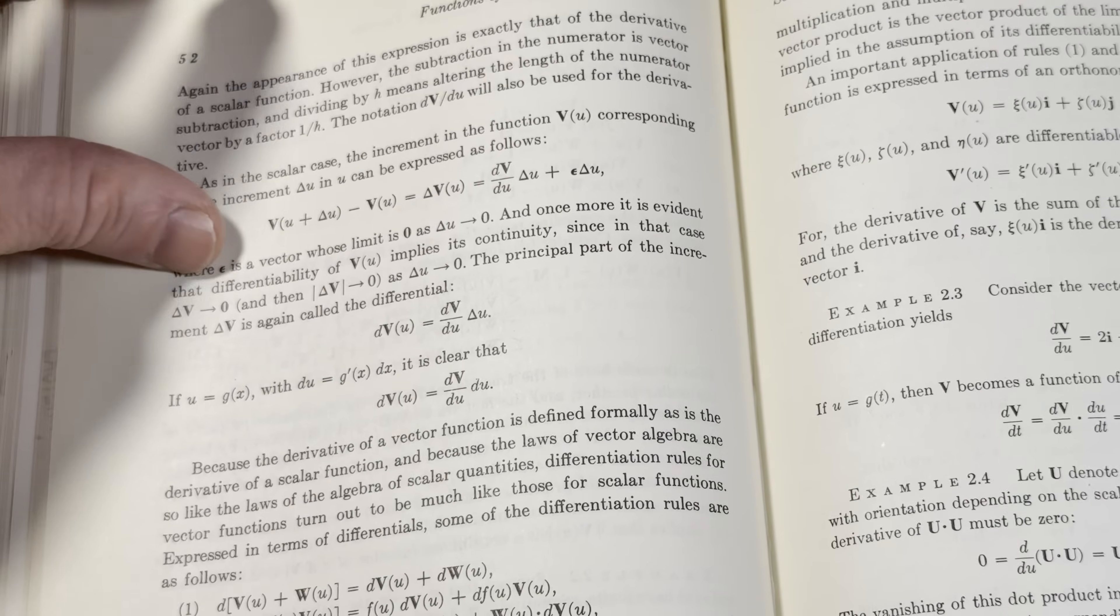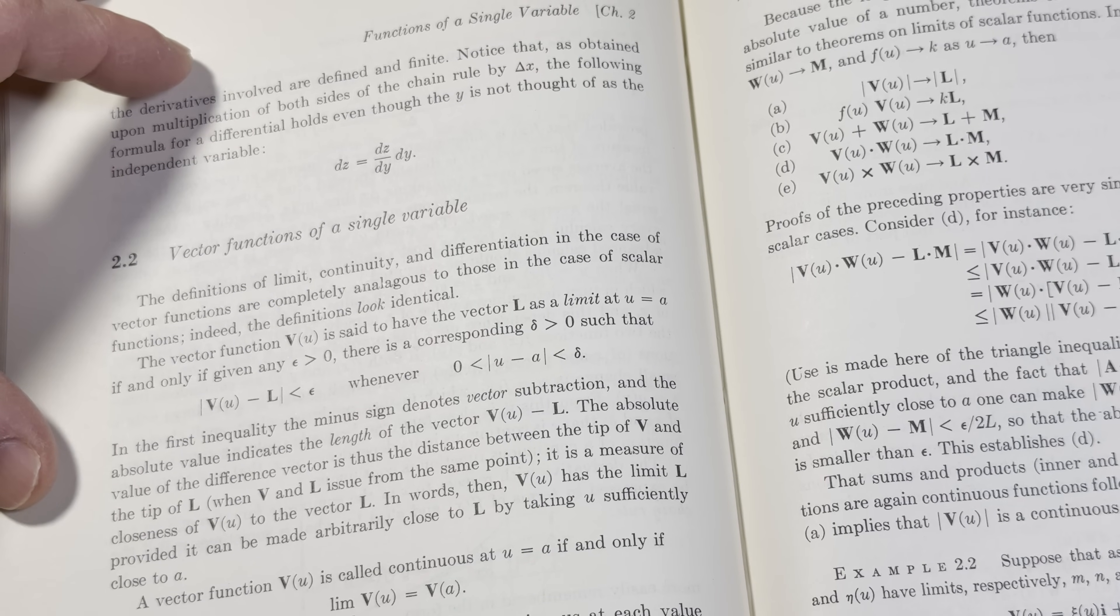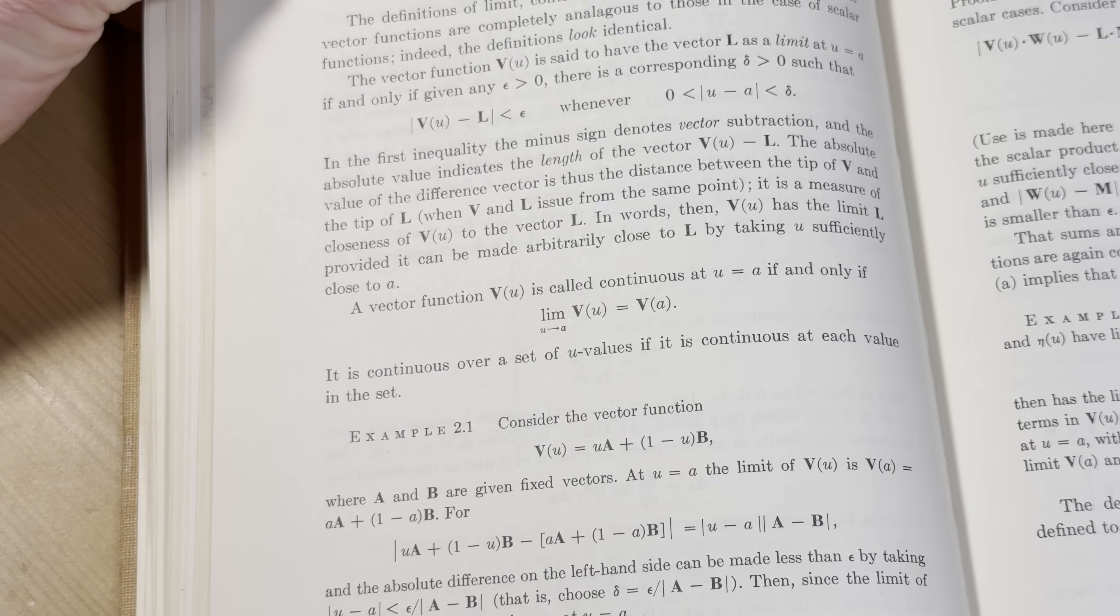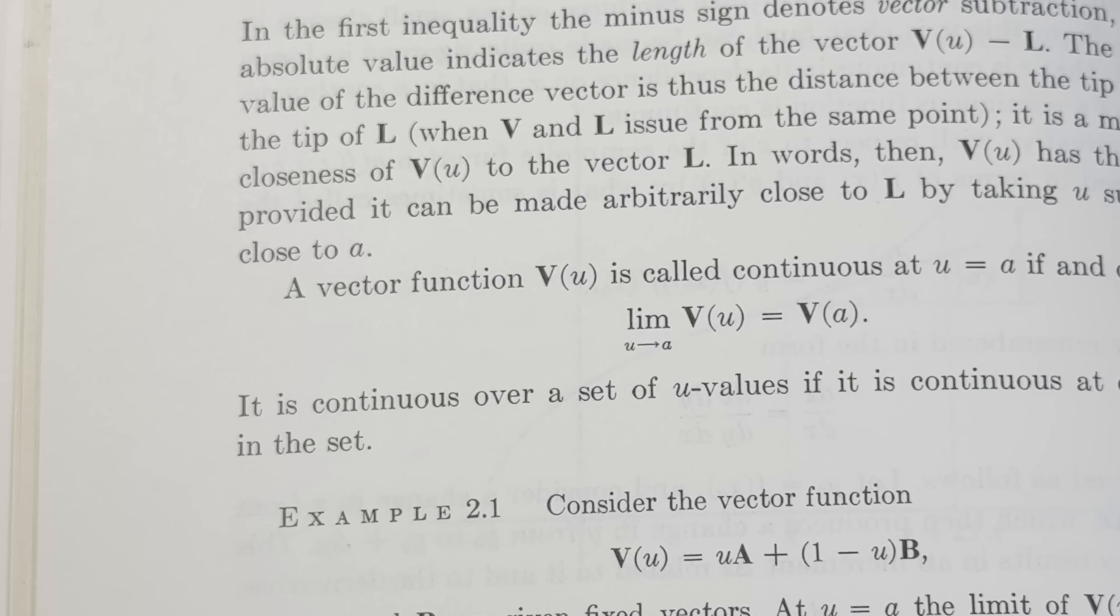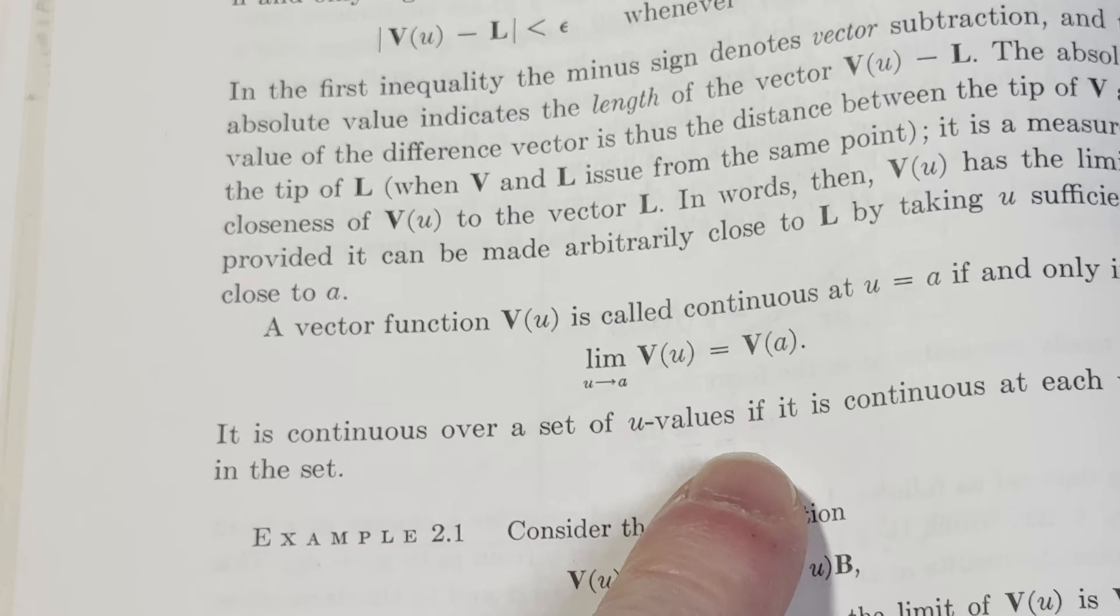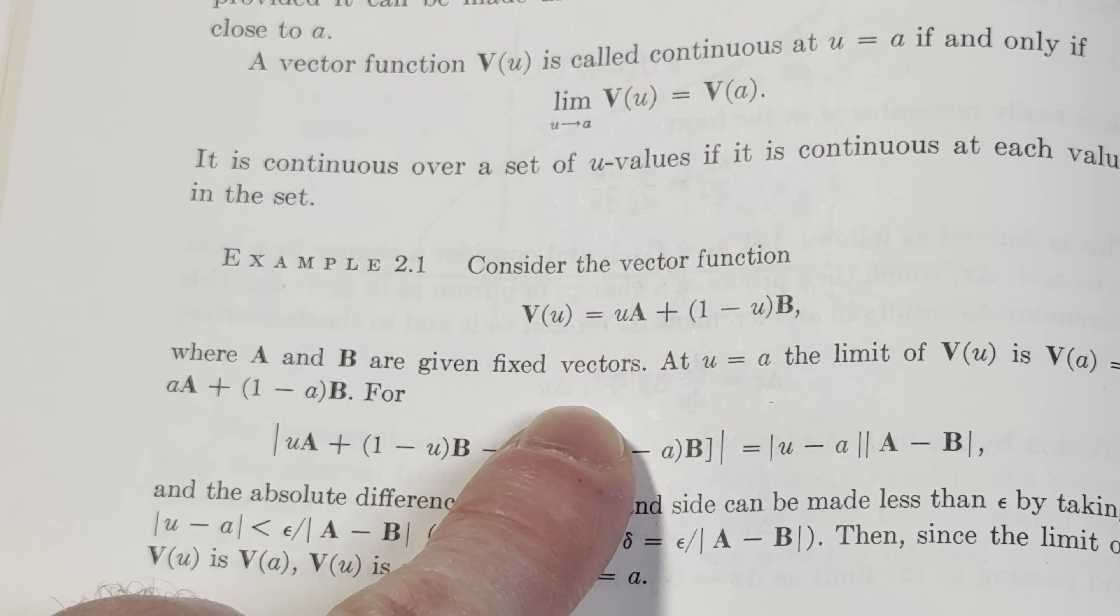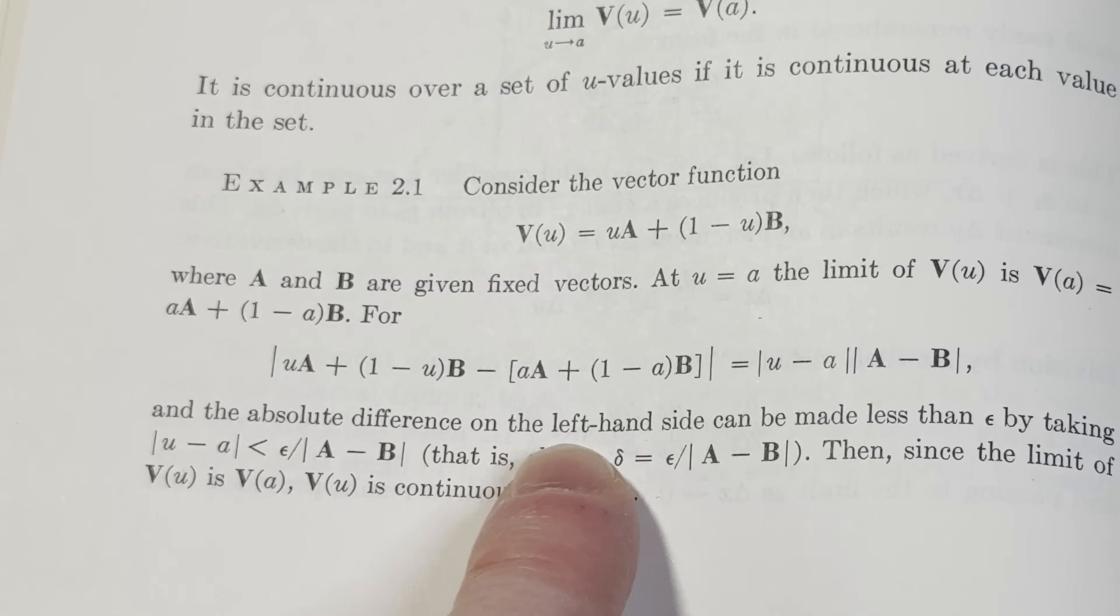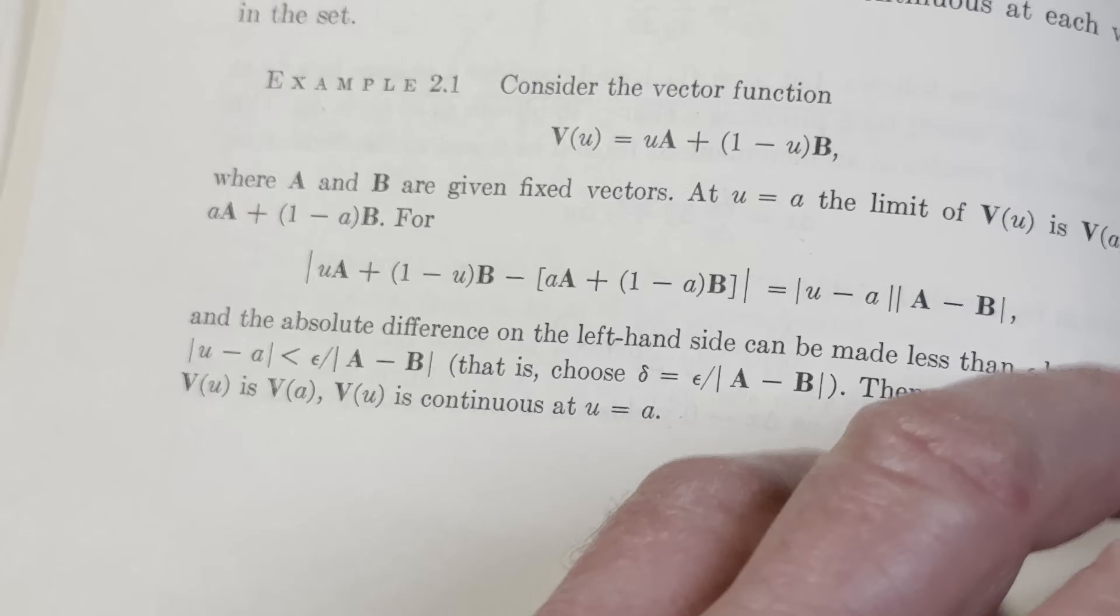A vector function v of u is called continuous at u equals a if and only if that limit exists. It is continuous over a set of u values if it is continuous at each value in the set. Here's an example. Here's a vector function. This is an important one where a and b are given fixed vectors. At u equals a the limit of v of u is there. So they're going through a proof.